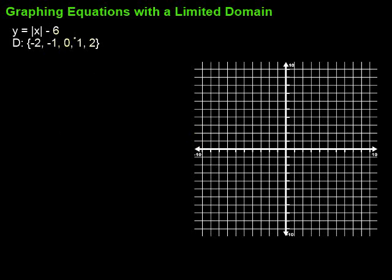First of all, there's a big difference between just graphing equations and graphing equations with a limited domain. With the limited domain we're not going to connect the dots because those are the only x values we can use. It's going to be just a series of points rather than a line where we connect the dots.